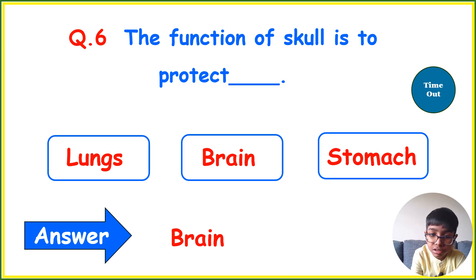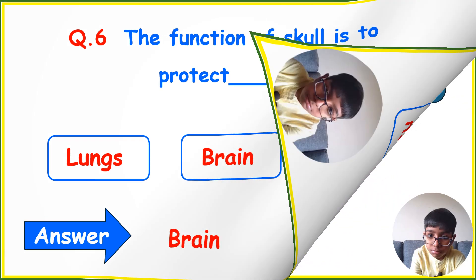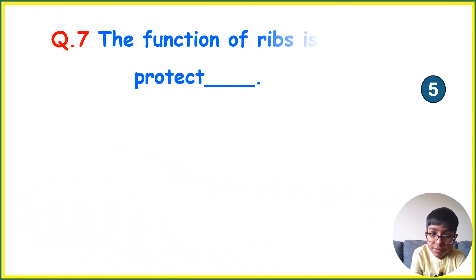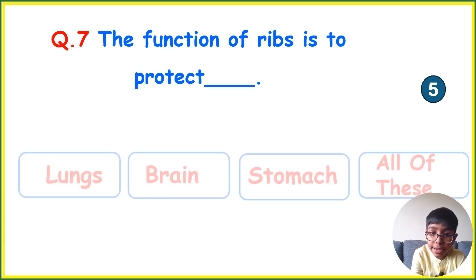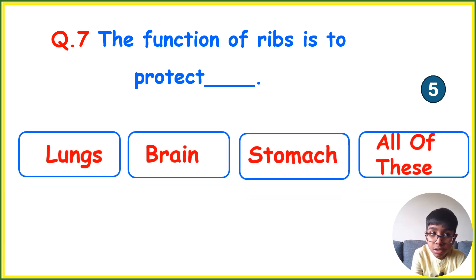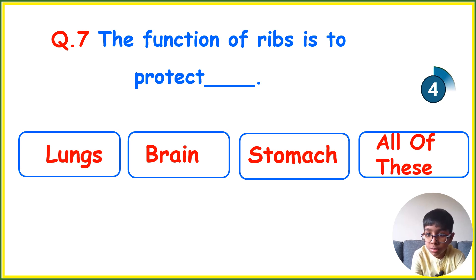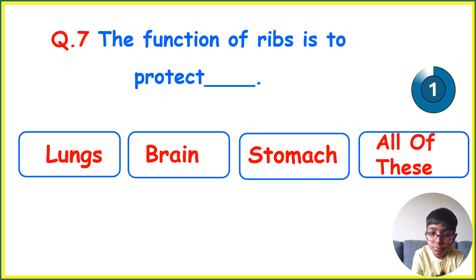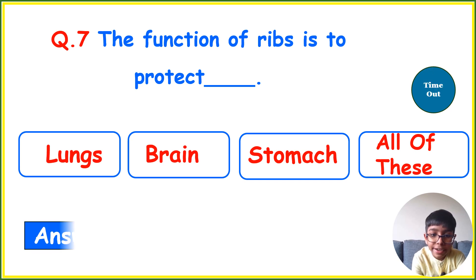Your next question is: The function of ribs is to protect — Lungs, Brain, Stomach, or All of these? Your time starts now. Your correct answer is Lungs.